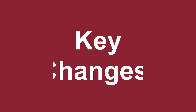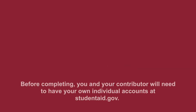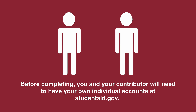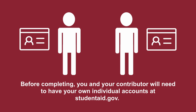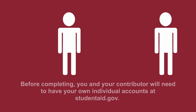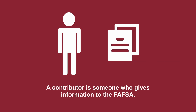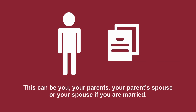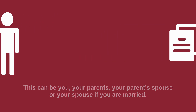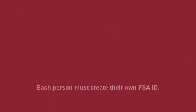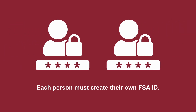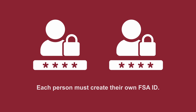Here are some key changes to the 24-25 FAFSA. Before completing, you and your contributor will need to have your own individual accounts at studentaid.gov. The contributor is someone who is going to contribute information to the FAFSA — this would be you, your parents, your parent's spouse, or your spouse if you are married. Each of you must create a FAFSA ID with a username and password that will be used as your electronic signature on the FAFSA.